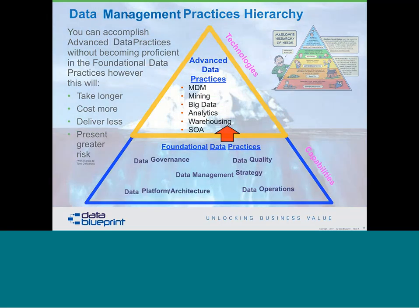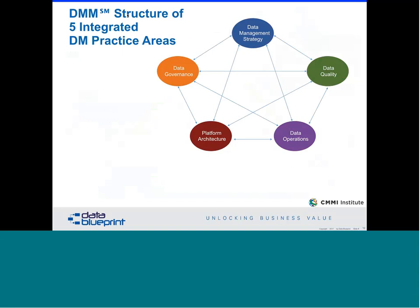One other point: the bottom half of the pyramid has a lot more to do with organizational capabilities as opposed to the technology focus at the top. We like the well-rounded solution. Those five foundational practice areas have now moved over into another diagram called the Data Maturity Model from the CMMI Institute. In the first part of this structure, we look at data quality — how big is your data, how complete is it, how correct is it, and how up-to-date are the most recent items.